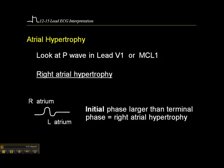Where we see atrial hypertrophy most commonly is in patients who have chronic left-sided failure. If blood is backing up into the atria, the atria have to work harder to expel that blood, and they consequently become larger.